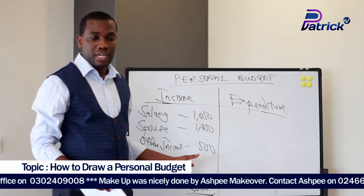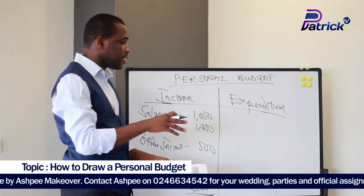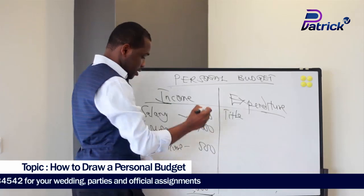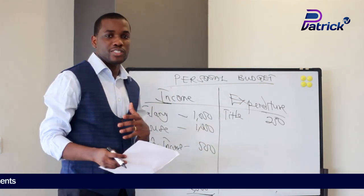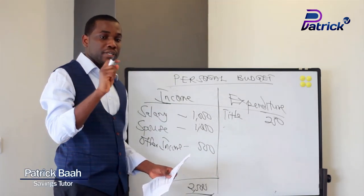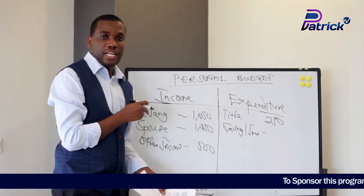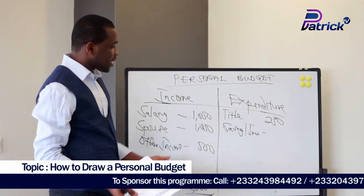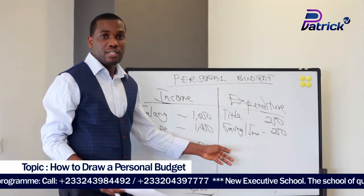Now you go to the expenses — the crucial part. Assuming you are a Christian and you believe in tithe, we all know tithe is 10%, so your tithe here is 250 cedis out of 2,500. Then the next item from the preamble is savings and investment — I said it should be between 10 to 20%, so you can choose 250 cedis for savings and investment. These two alone give you 500 cedis spent, leaving 2,000 cedis to spread on your other expenses.